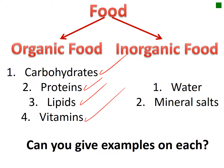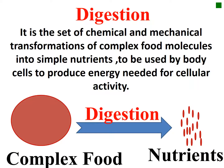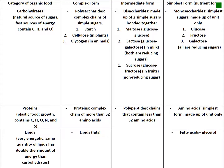Food is divided into organic and inorganic. Organic includes carbohydrates, proteins, lipids, and vitamins. Inorganic includes water and mineral salts. For Grade 9, the definition of digestion is the chemical and mechanical transformation of complex food molecules into smaller ones called nutrients, which are used by body cells to produce energy needed for cellular activity.